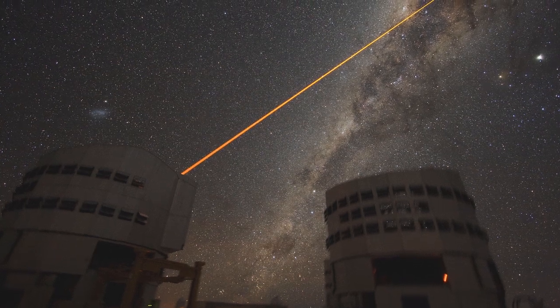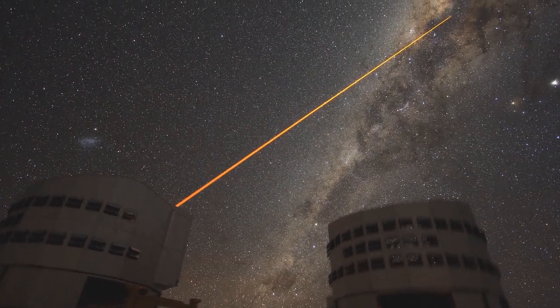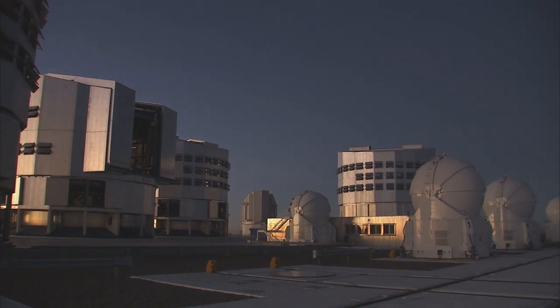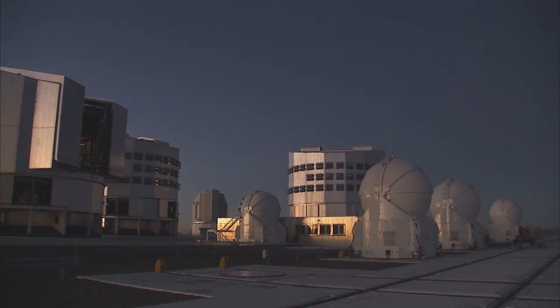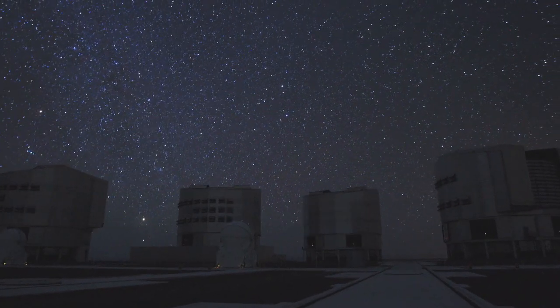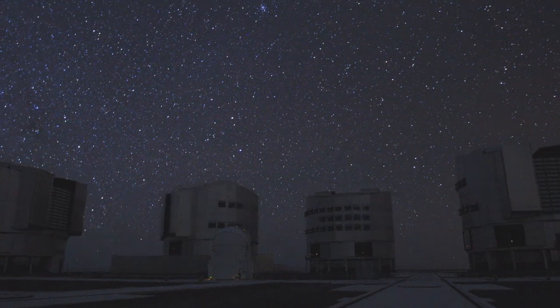But the team doesn't plan to stop here. Now in the past they've used the novel technique of adaptive optics to remove the blurring effects of the atmosphere. In the future they plan to do even better and to get even higher resolution images by using another new technique called interferometry. This is where you combine the light from two or more of the VLT's unit telescopes together.